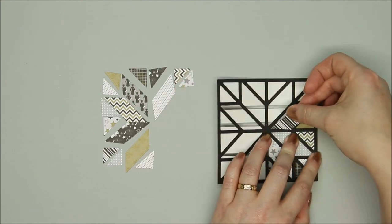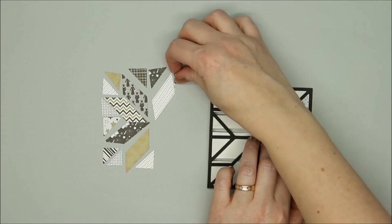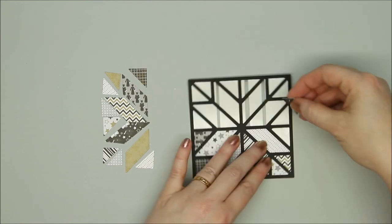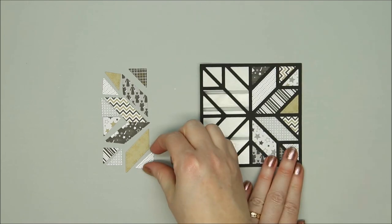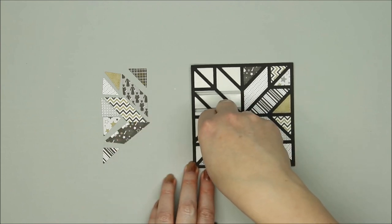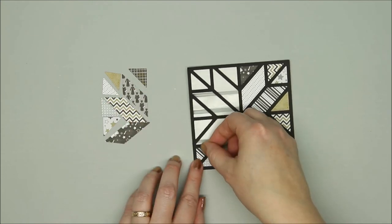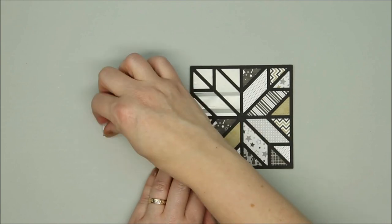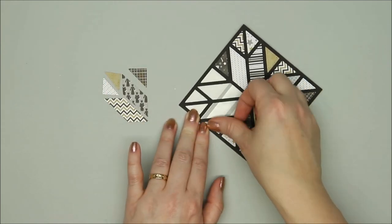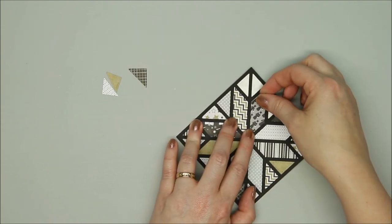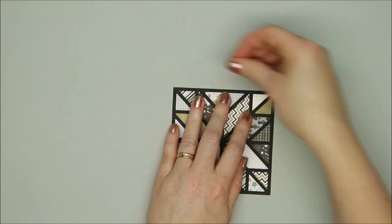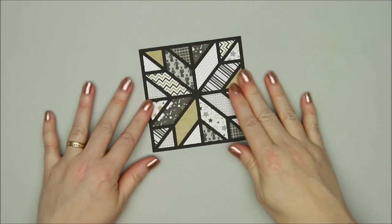After the score tape is attached, I flip the frame over and start adding the quilt pieces. This is why it's handy to have the quilt loosely assembled. It makes it easy to place the pieces in the correct spot. Score tape is super sticky, so be sure it's in the right spot. Once in place, the pieces can't be easily removed. It's kind of like assembling a jigsaw puzzle, only you already know where all the pieces go.